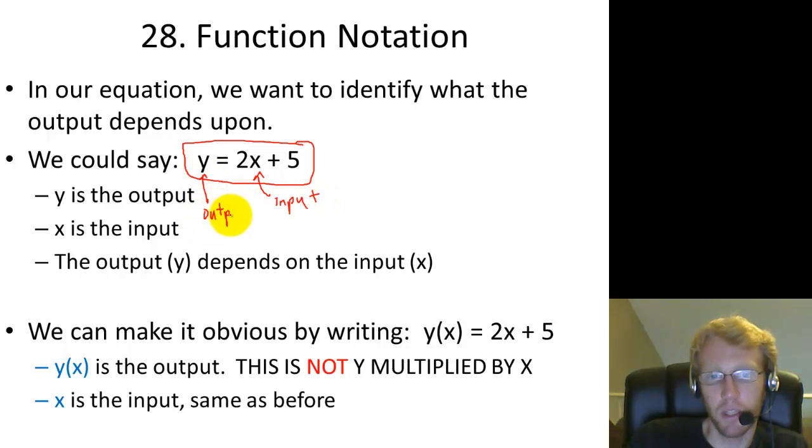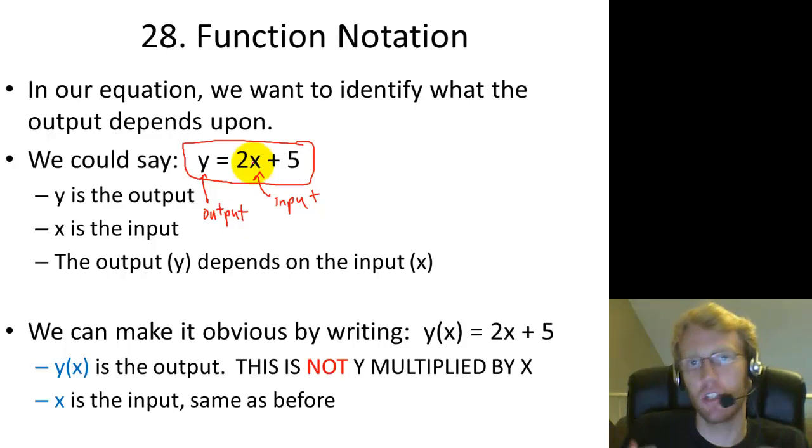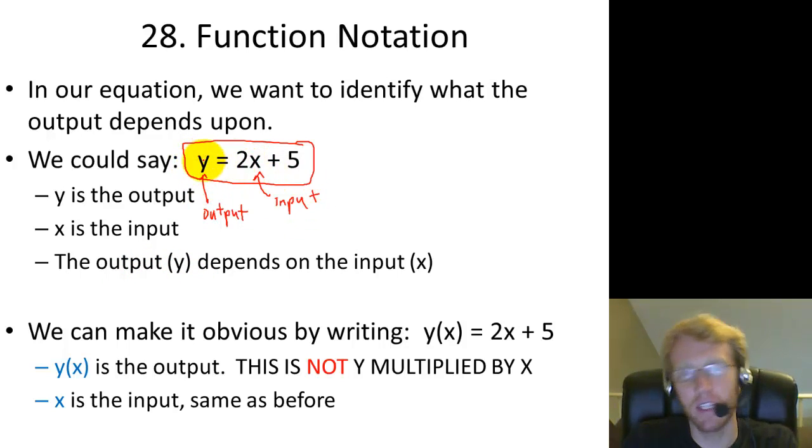But there's nothing explicitly saying that in this equation. There's nothing labeling one as the input, one as the output except the fact that we've done it so much now we know that. So the output y depends on the input x and it's written with a y by itself which is typically how you'll write these. Output equals some giant equation that's got the input somewhere in there. But it's nice to make it obvious what the input is and what the output is.